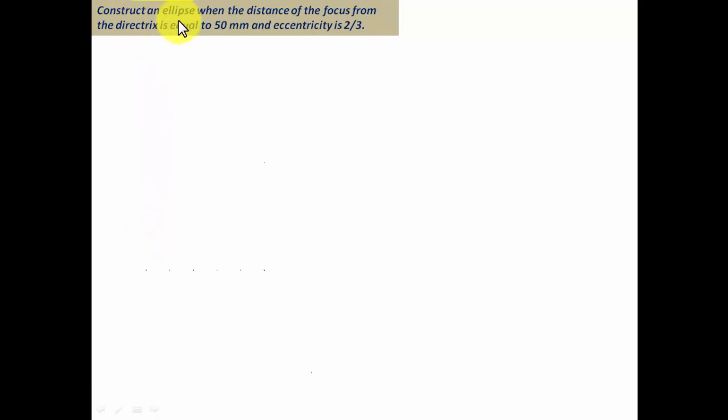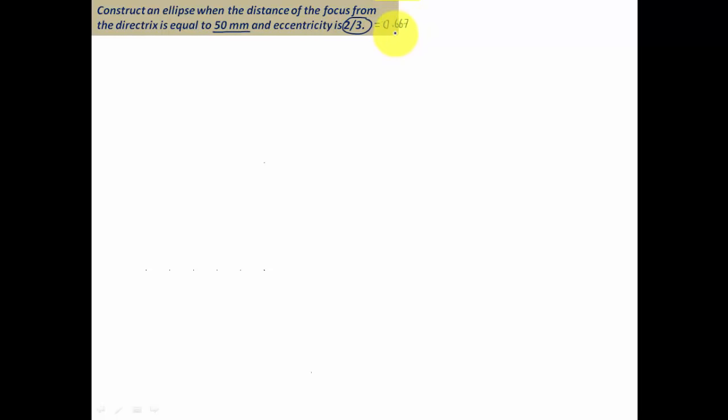What's up guys, Manas here. Today we're going to be talking about a very important method of constructing an ellipse — the general method. Two important things have been given: one is the distance of focus from the directrix, which is equal to 50 millimeters, and the second is the eccentricity, which is a ratio of 2 by 3, working out to roughly 0.667. Remember: whenever the eccentricity is less than 1, the curve is an ellipse; greater than 1 is a hyperbola; equal to 1 is a parabola.